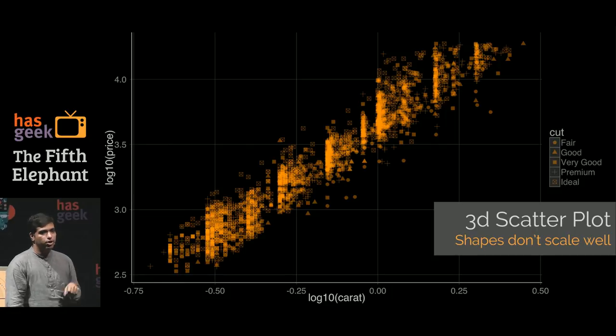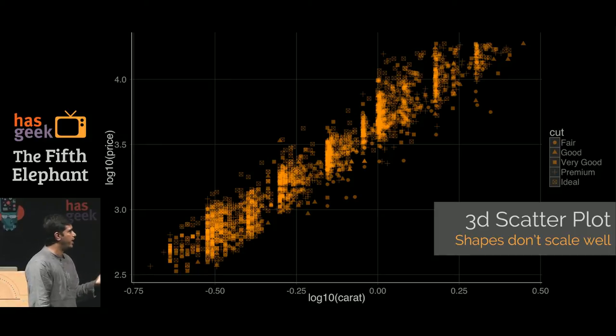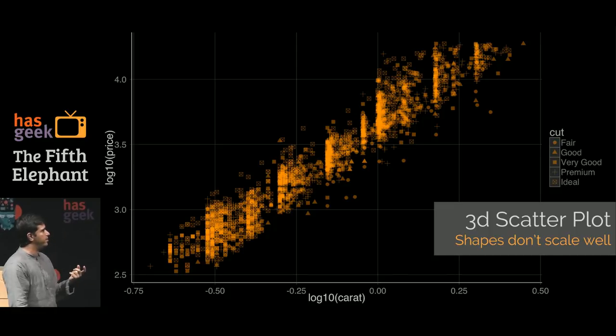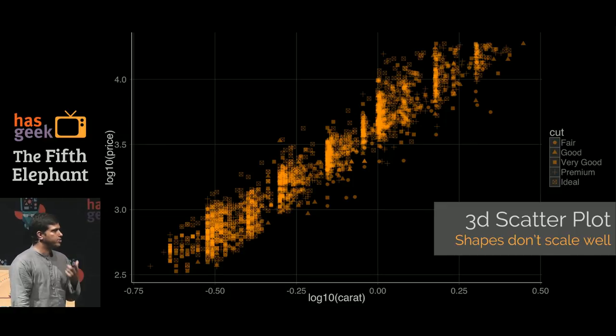We can also see shapes. Shapes don't really scale that well. I'm using a different shape, five different shapes to demonstrate different cuts. But even with a sample of the data, this is less than the entire data set, probably 10% of the data set, it clutters up very quickly. Shapes don't really scale very well with large data.